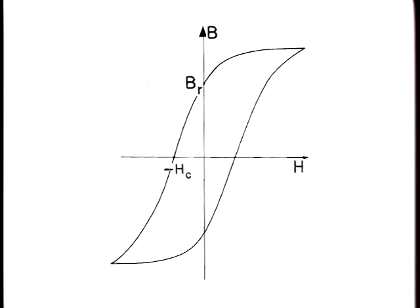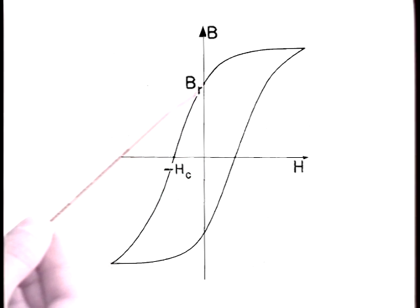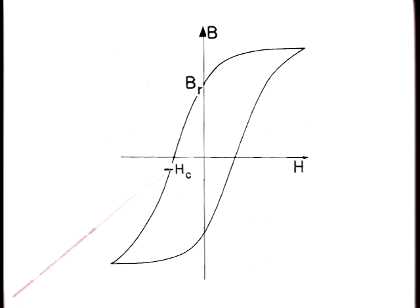The BH trajectory makes this evident. It shows that even when the applied field H is instantaneously 0, there remains a remnant flux density, B sub R. And the field must be reversed to minus H sub C, the coercive field intensity, to reduce the flux density to 0.